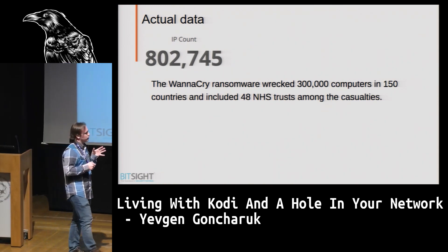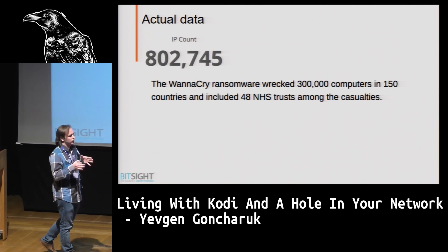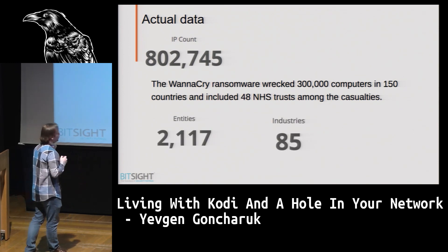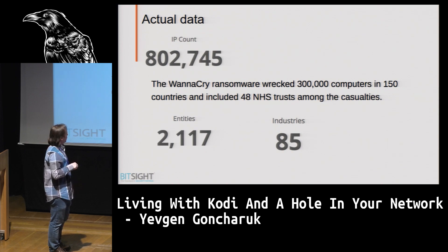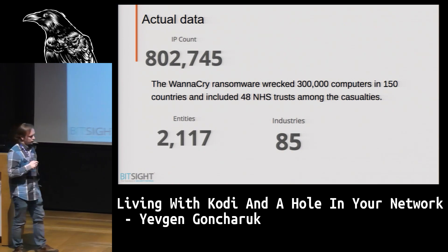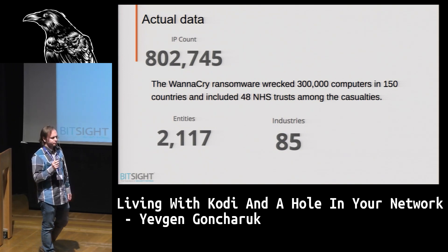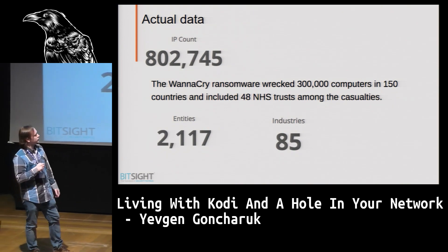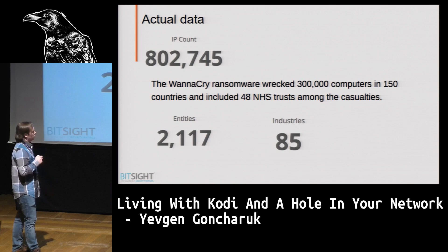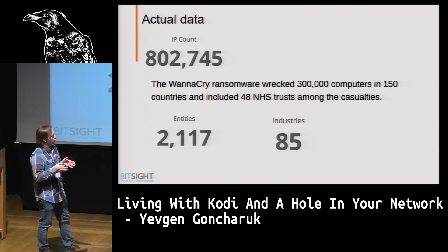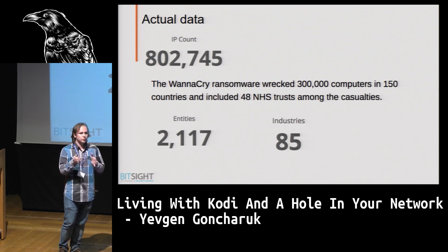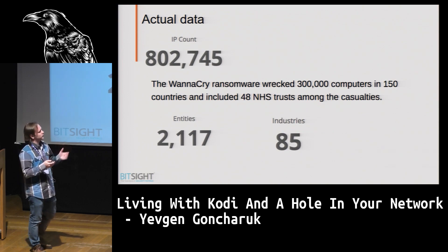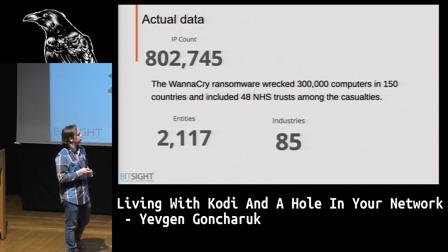So what are the other places? This number — 2,217 — is the number of unique companies that have Kodis installed, and we have 85 different industries running them. At BitSight we have entity mapping and we know what company has what IP. We know what company it is, where it's located, what its IP range is, the company name, its location — stuff like that.